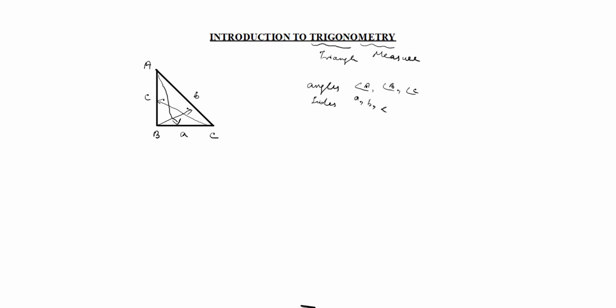You see here: this is the AC side, this is side a, this is side b. We need to calculate these. The angles are angle A, angle B, angle C. Angle B is a known value — this is 90 degrees, a right angle triangle.